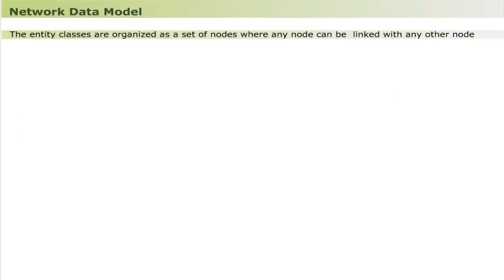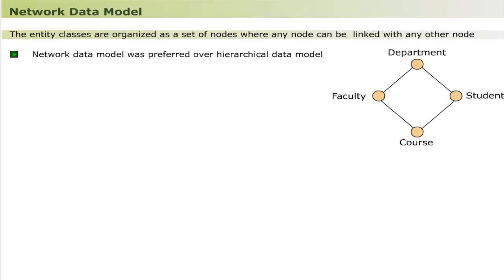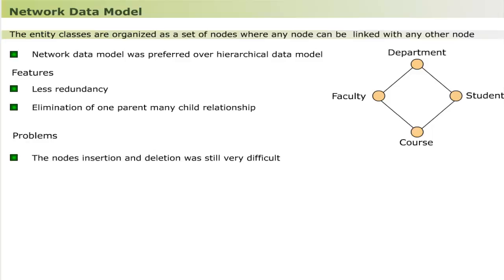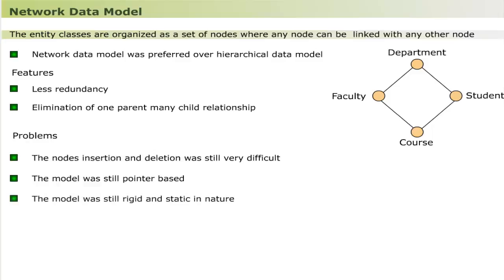In the network data model, entity classes are organized as nodes where any node can be connected to any other node. It was preferred over the hierarchical model due to less redundancy and elimination of the one parent-many-child restriction. However, problems remained: difficult node insertion and deletion, still pointer-based, and still rigid and static in nature. These were overcome with the relational data model.